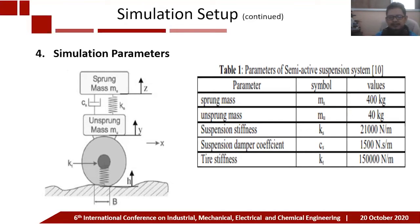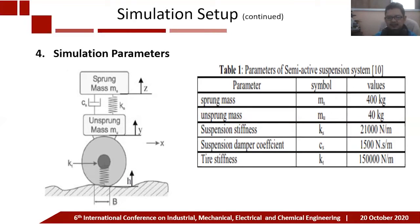For the sprung mass — representing the body of the vehicle — the value is 400 kg. The unsprung mass, representing the suspension structure, is 40 kg. The dynamic suspension and damper component values can be found in Table 1.